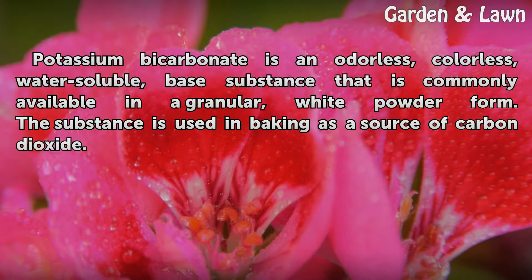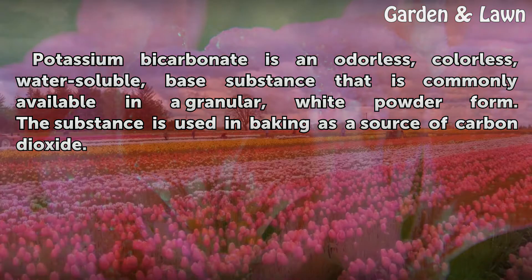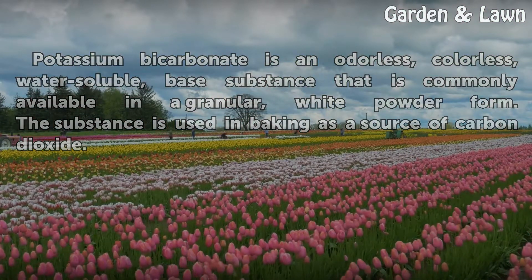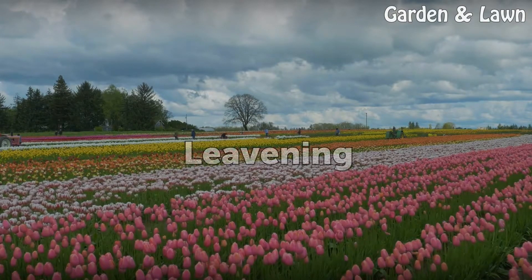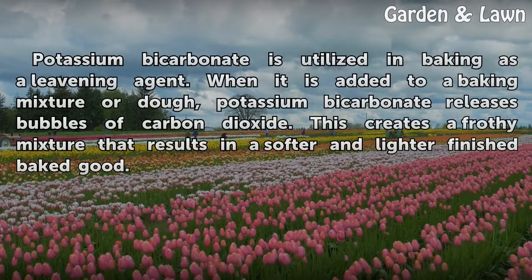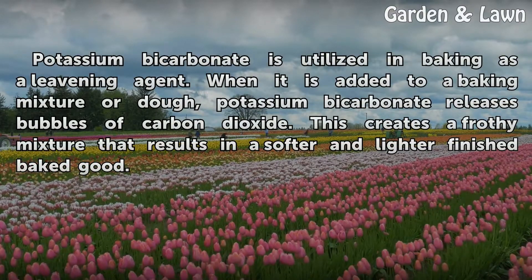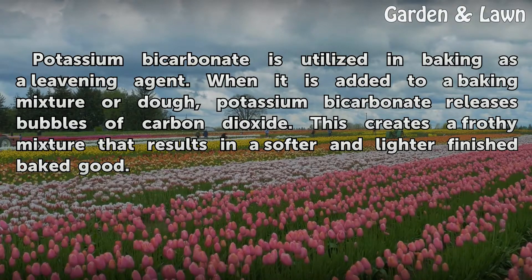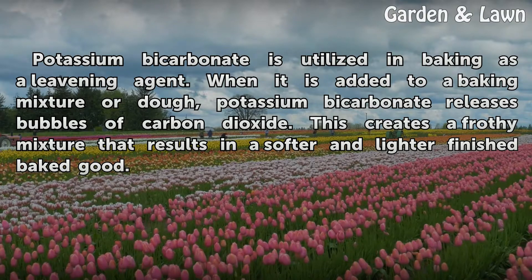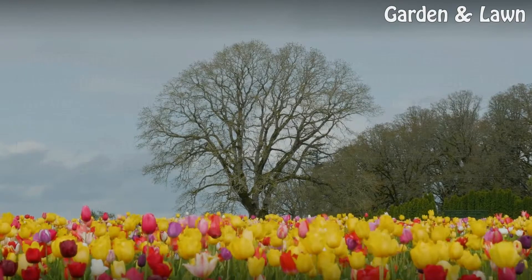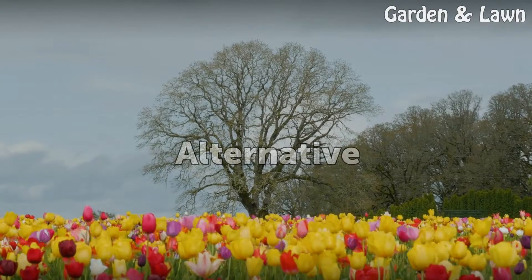Potassium bicarbonate is an odorless, colorless, water-soluble base substance that is commonly available in a granular white powder form. The substance is used in baking as a source of carbon dioxide leavening. When added to a baking mixture or dough, potassium bicarbonate releases bubbles of carbon dioxide, creating a frothy mixture that results in a softer and lighter finished baked good.